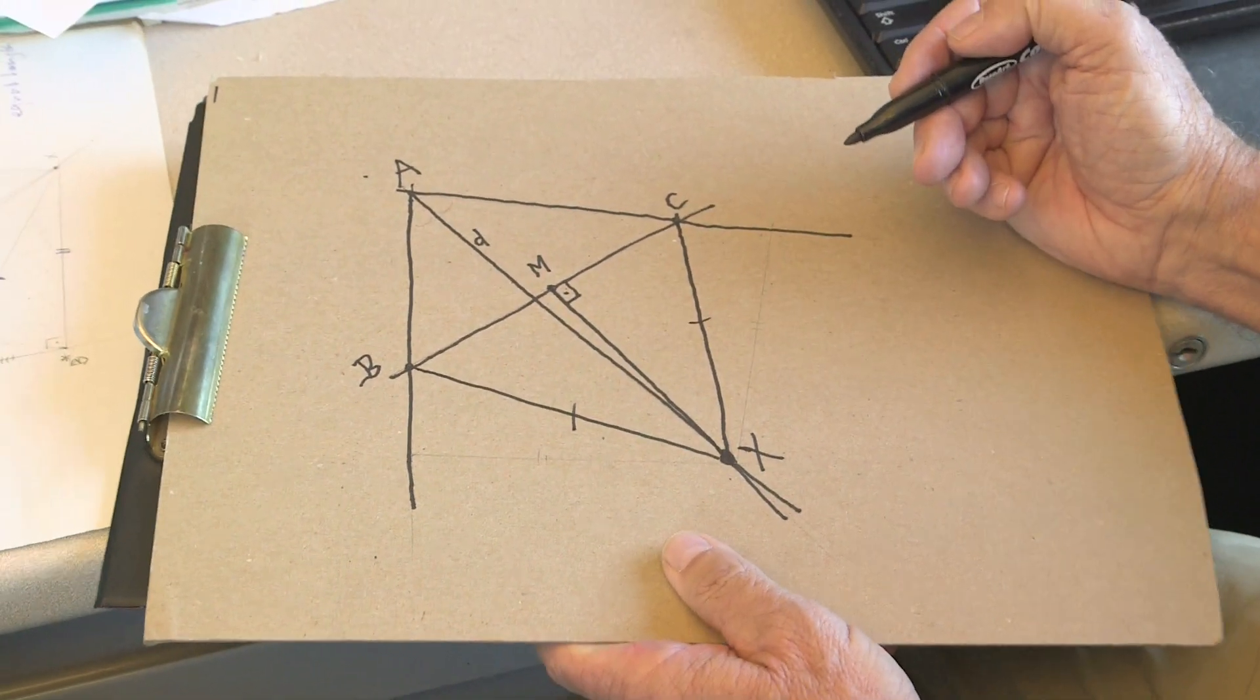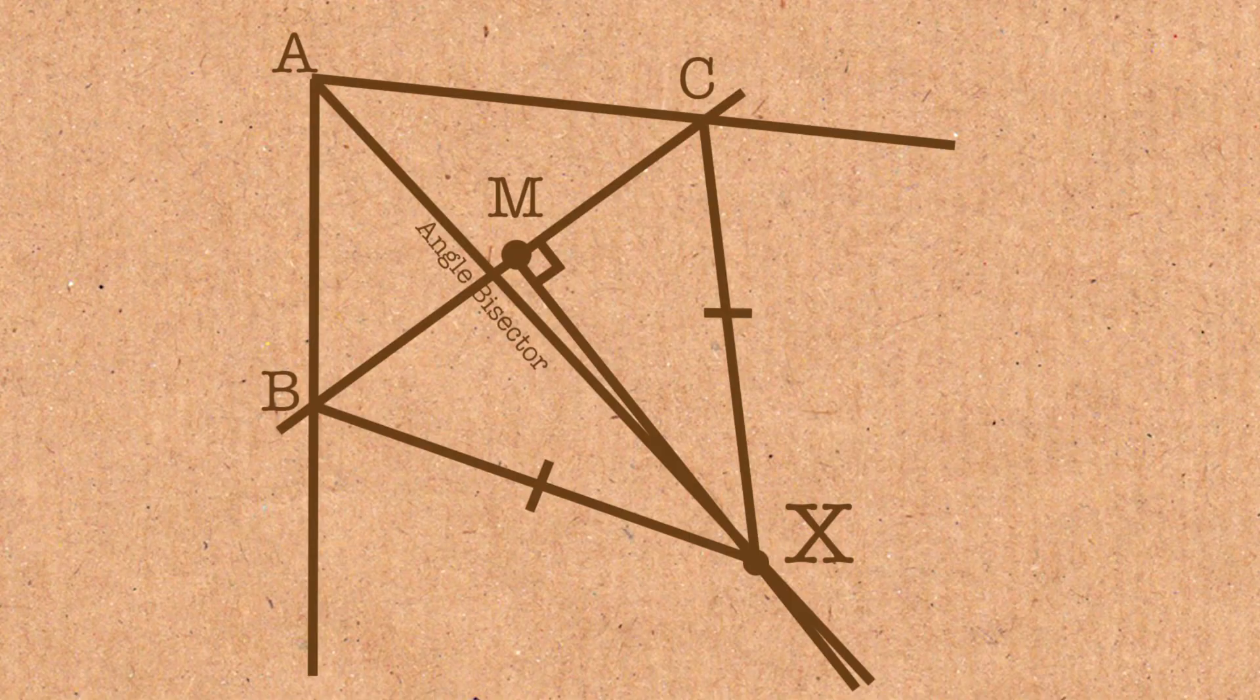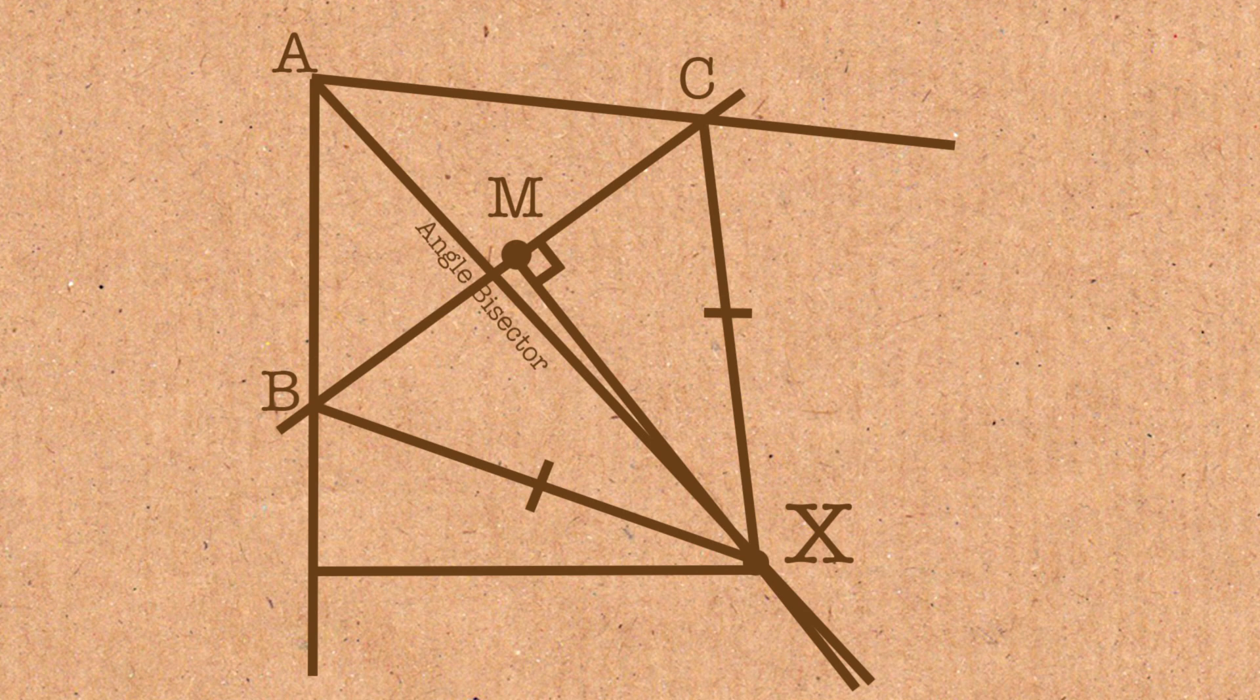But also if I draw the shortest distance from X to line AB, which might look something like that, and comes in at the right angle here, and I draw the shortest distance from X onto line AC with a right angle here, let's call this point B star and let's call this point C star, then I know that XB star is equal to XC star, because we're on the angle bisector, and these are all the points that are equidistant from those two lines.